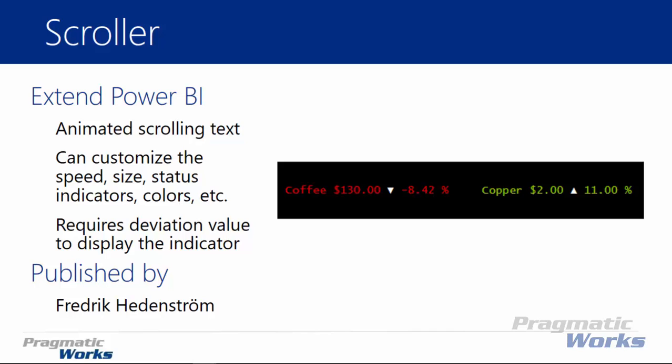There are a couple of required values for the scroller. One is what you're trying to measure — here we're measuring coffee, copper, or other elements. You also need an actual value, such as the stock price for coffee being $130. Then you need some kind of deviation value for the indicator to work — to see an arrow or a color change based on the data. In this case that's the percentage the value is up or down, such as whether coffee is up or down from yesterday.